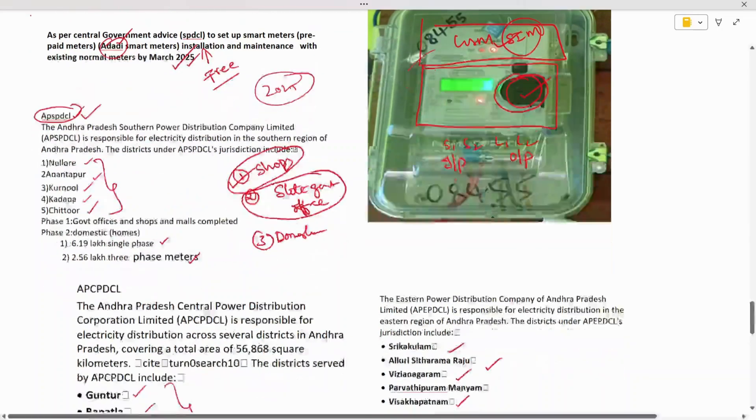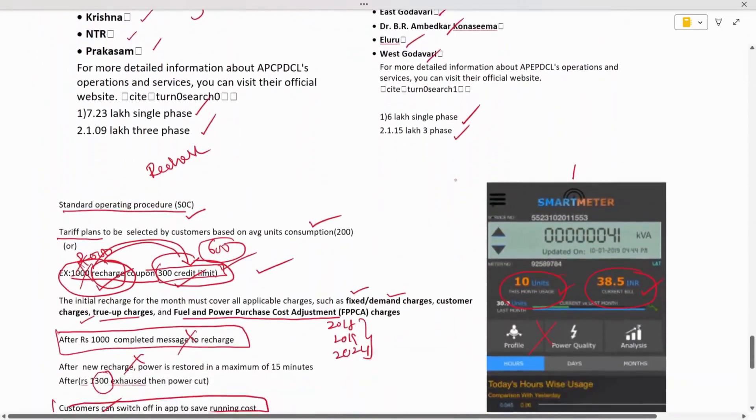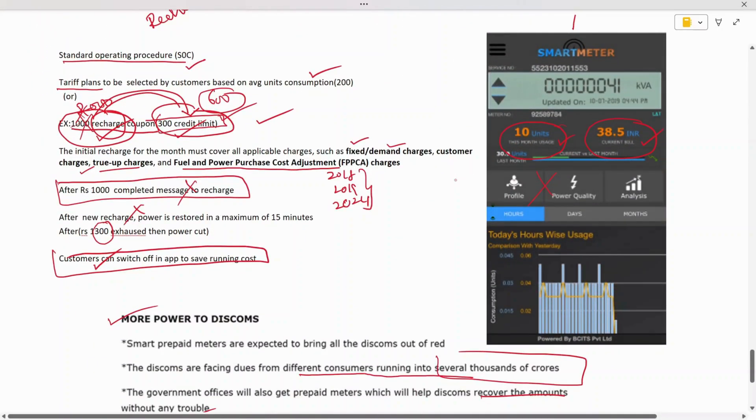Hope you got some clarity on the standard operating procedure. If you do a 1000 rupee recharge, you'll get a 300 rupee credit limit. The main advantage is you can see how many units you've consumed till date, how much you need to recharge, and manage when recharge is completed.